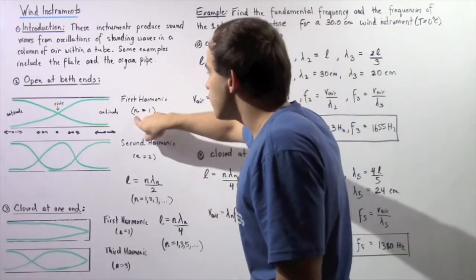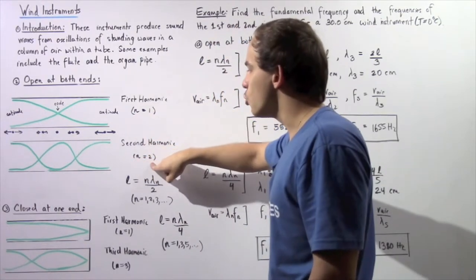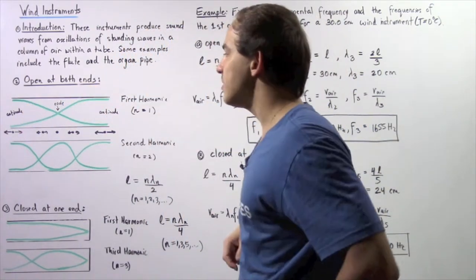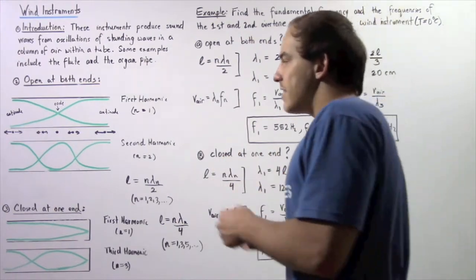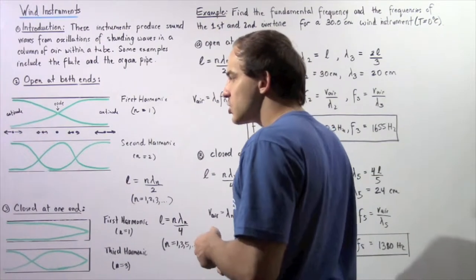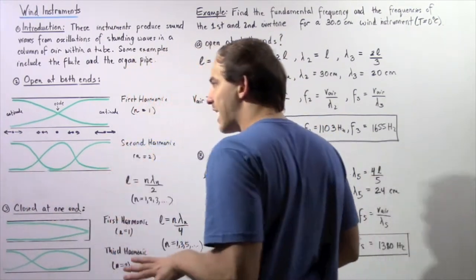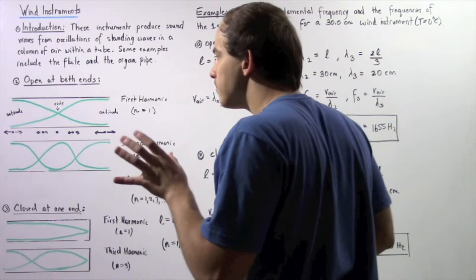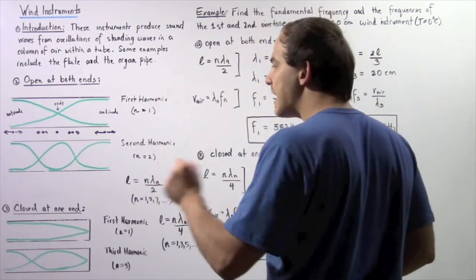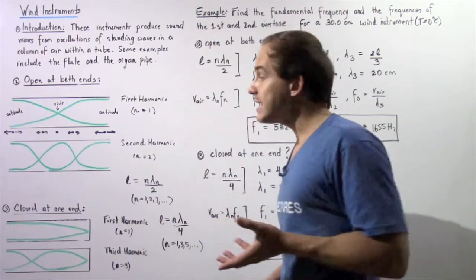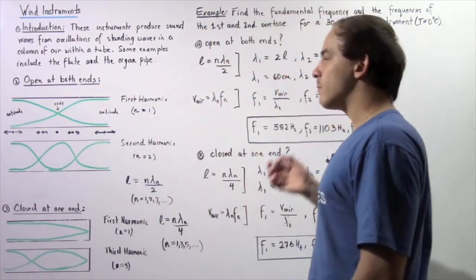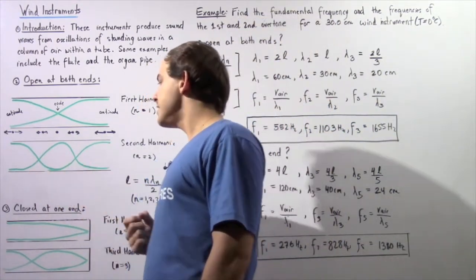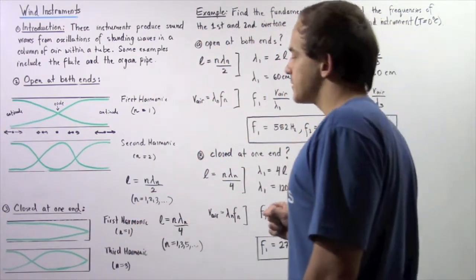Now let's go from n equals 1 to n equals 2, observing the second harmonic. Let's count the antinodes and nodes within a wind instrument with a pipe open at both ends. We have three antinodes and two nodes. The antinodes are the regions where air molecules vibrate with the greatest possible displacement, while the node regions are where molecules do not vibrate because the displacement is zero — that's where destructive interference takes place.